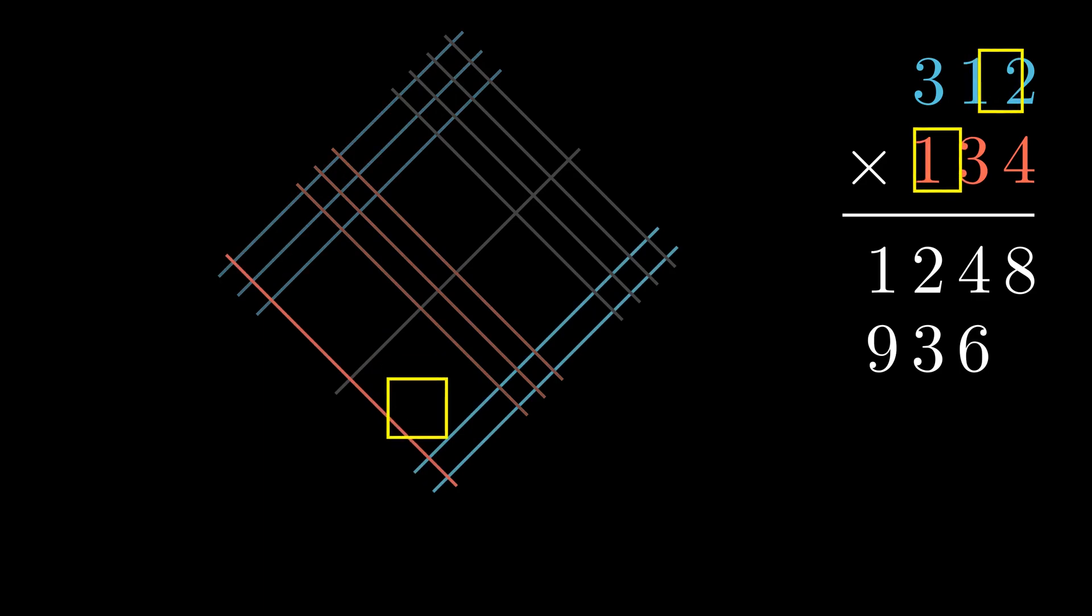Similarly, 1 times 2 equals 2, and once again make sure it's in the same column that 1 is. Here's 1 times 1 equals 1, and last but not least, 3 times 1 equals 3.